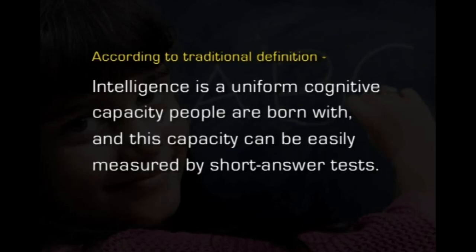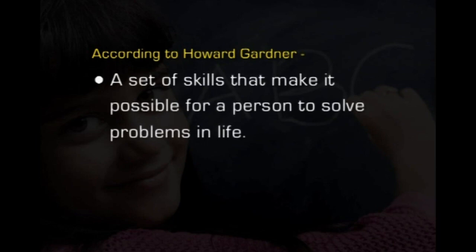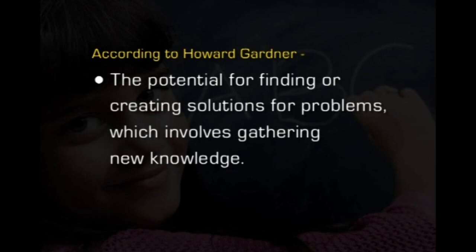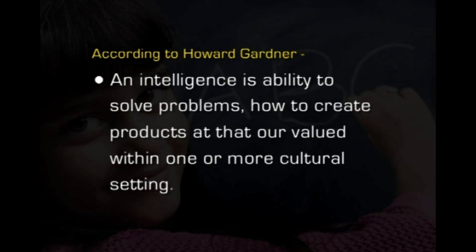Gardner's MI theory challenged the traditional beliefs and approaches in the fields of education. According to the traditional definition, intelligence is a uniform cognitive capacity people are born with, and this capacity can be easily measured by short answer tests. According to Howard Gardner, intelligence is the ability to recreate an effective product or offer a service that is valued in a culture, a set of skills that make it possible for a person to solve problems in life, and the potential for finding or creating solutions for problems which involves gathering new knowledge, and the ability to solve problems or create products that are valued within one or more cultural settings.